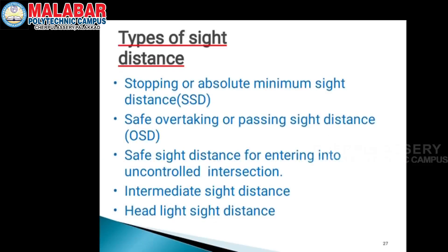The main sight distance is used for entering into an uncontrolled intersection. The types include: Intermediate Sight Distance and Headlight Sight Distance.